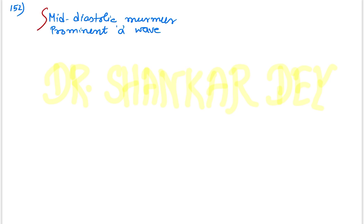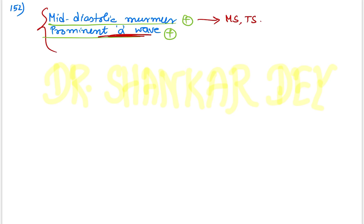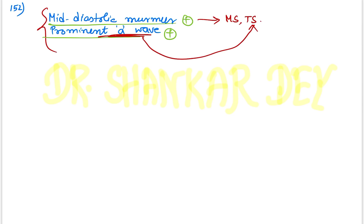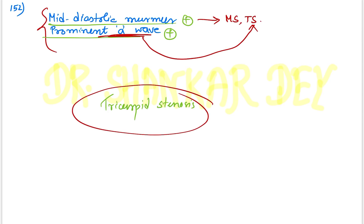Question 152: Mid-diastolic murmur — long question, but the key clinical clinchers are mid-diastolic murmur and prominent 'a' wave. Mid-diastolic murmur can be seen in mitral stenosis or tricuspid stenosis. The prominent 'a' wave indicates this is more likely tricuspid stenosis. So the answer for this valvular pathology question is tricuspid stenosis.